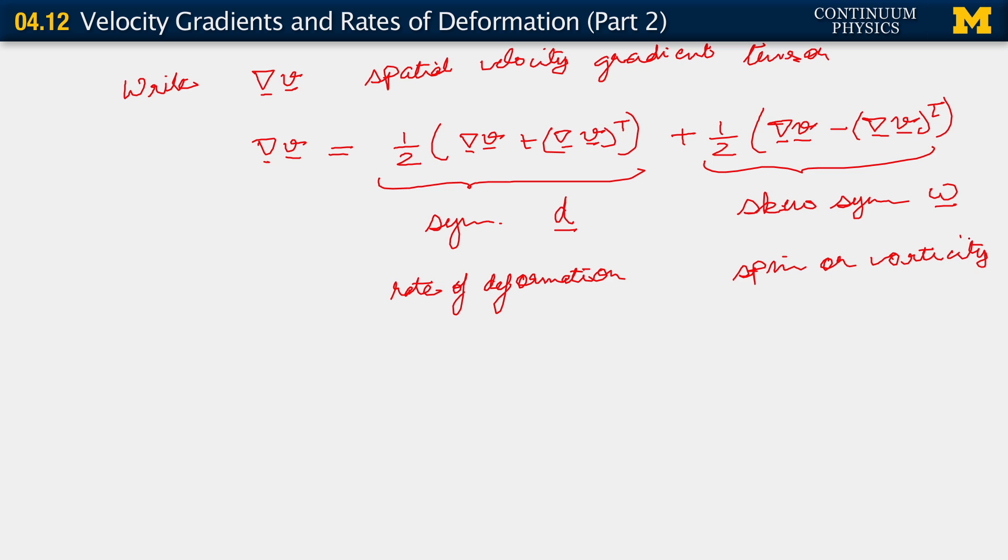As a final thing, I will recall that since omega is a skew-symmetric tensor, it also admits this axial vector representation. So recall that omega acting on a vector u for all u belonging to R3 can also be written as an axial vector which, following the convention we introduced quite a few segments ago, we will write as omega-hat crossed with u. And in this case, this is simply the vorticity vector.